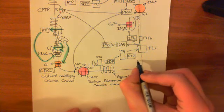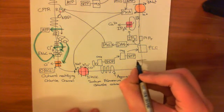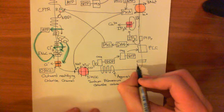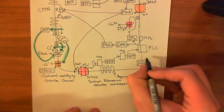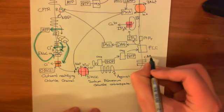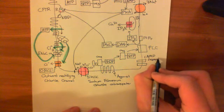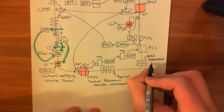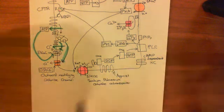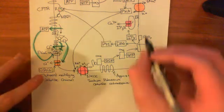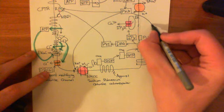There are also two important channels down here for removing the potassium, which are the cyclic AMP-dependent potassium channel. So I'll put cyclic AMP-dependent potassium channel, KC for potassium channel. And that is activated by protein kinase A, so there's another function of protein kinase A.